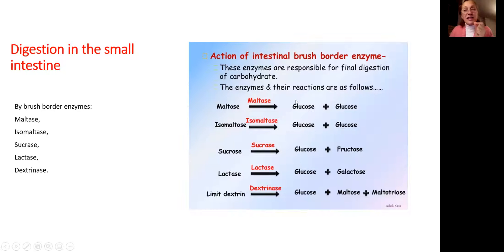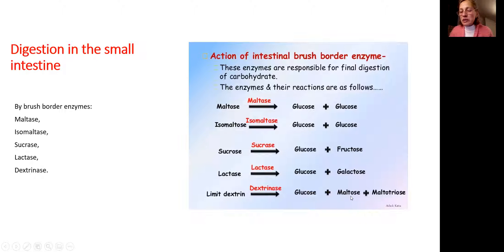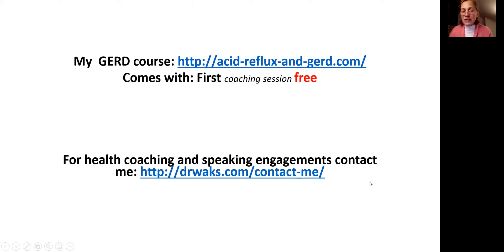This is an essential part to understand: those smallest particles — only they will get absorbed through the digestive tract into the bloodstream. And they are glucose, fructose, galactose, maltose, and maltotriose.